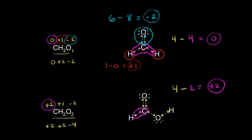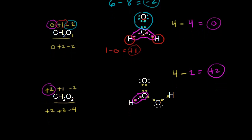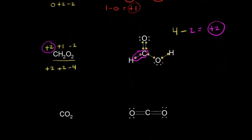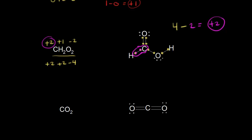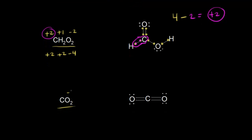Every molecule we've done so far has had a different oxidation state for carbon — carbon is unique in that it has all these different oxidation states. Finally, let's look at carbon dioxide. Oxygen should have an oxidation state of minus two, and we have two of them for a total of minus four, so carbon must have an oxidation state of plus four.